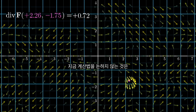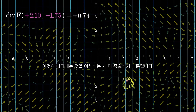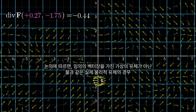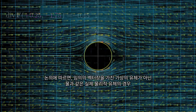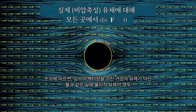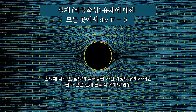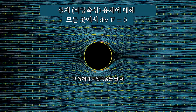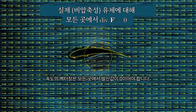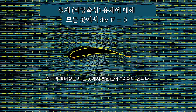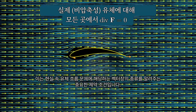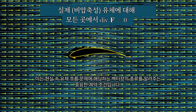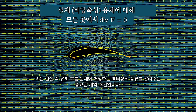I'm purposefully delaying discussion of computations here — the understanding of what divergence represents is more important. Notice this means that for an actual physical fluid like water, if that fluid is incompressible, the velocity vector field must have a divergence of zero everywhere. That's an important constraint on what kinds of vector fields could solve real-world fluid flow problems.